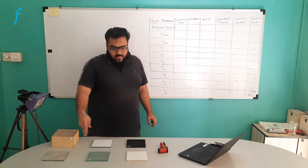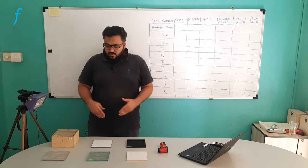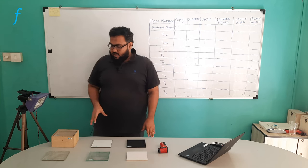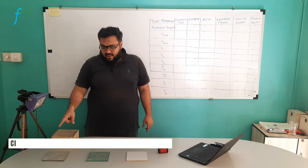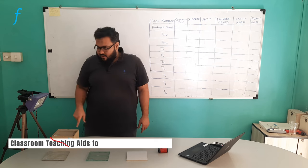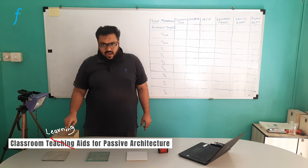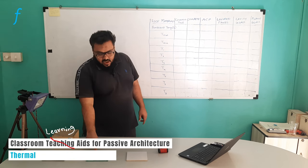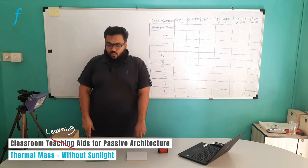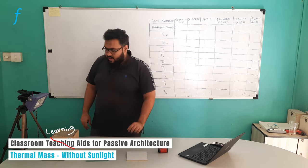Here we have different building materials from the kit. This is the box and these are the different building materials, which include the plain glass, the cavity glass, the aluminium composite, the louvered panels, the concrete, and the ceramic tile.